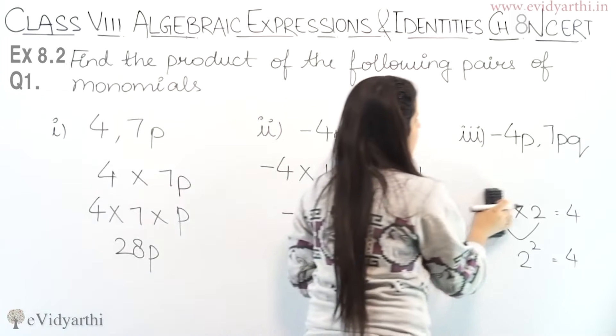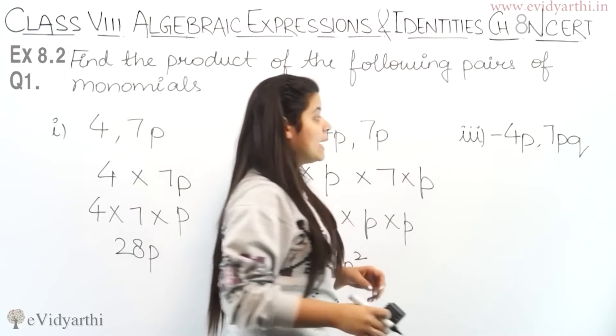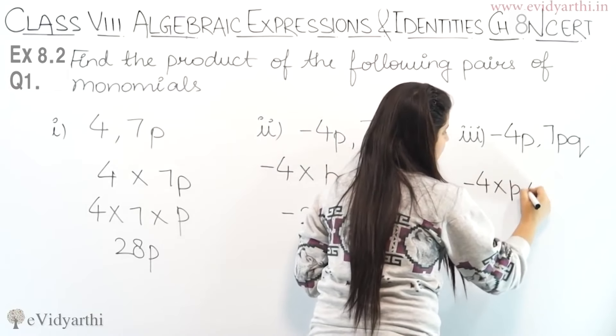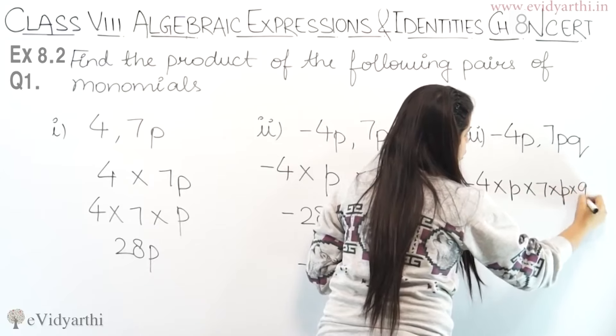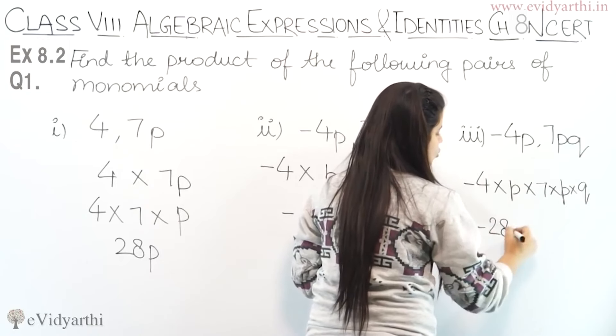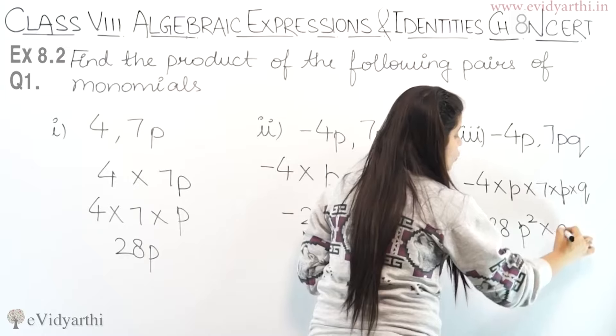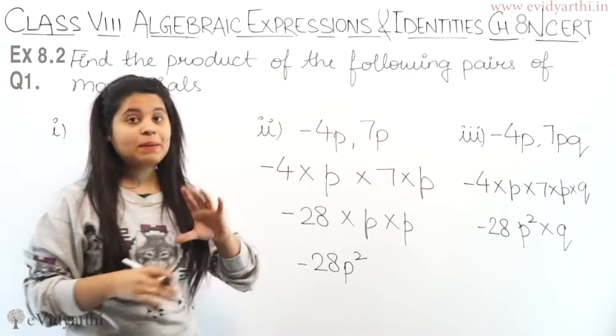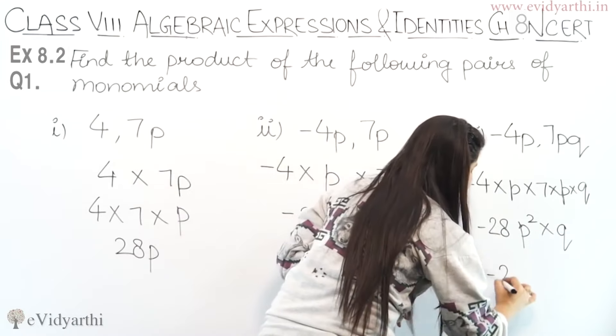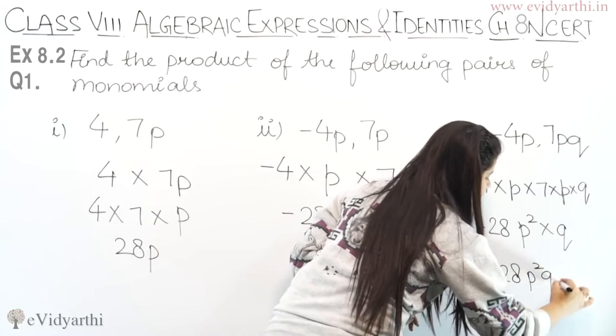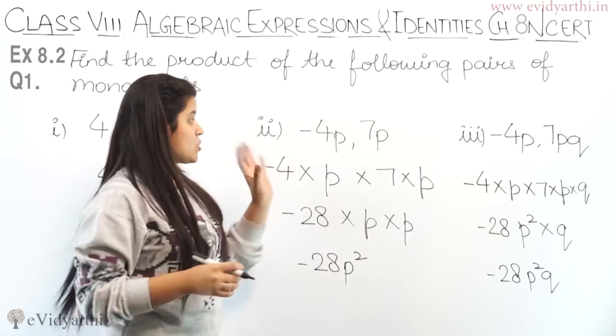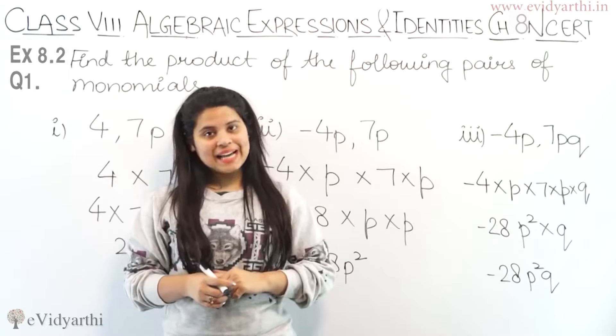Now the third part is minus 4P and 7PQ. So it is minus 4 into P into 7 into P into Q. Now minus 4 into 7 is minus 28, P into P is P square, times Q. You cannot multiply P square and Q or make it cube because P is a separate variable, Q is a separate variable. So this is the answer: minus 28P square Q. So this was part number 1, 2, and 3. Now let's come to the other parts.